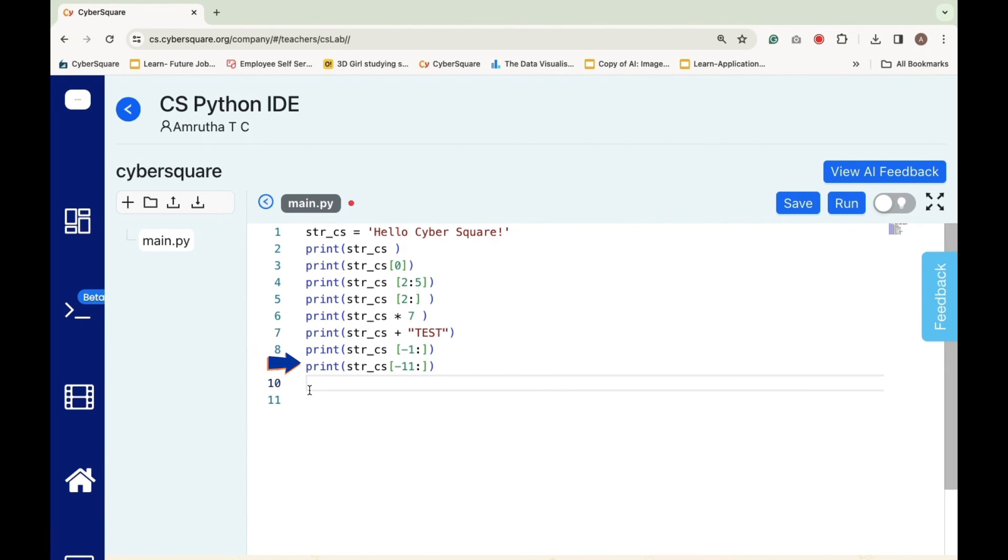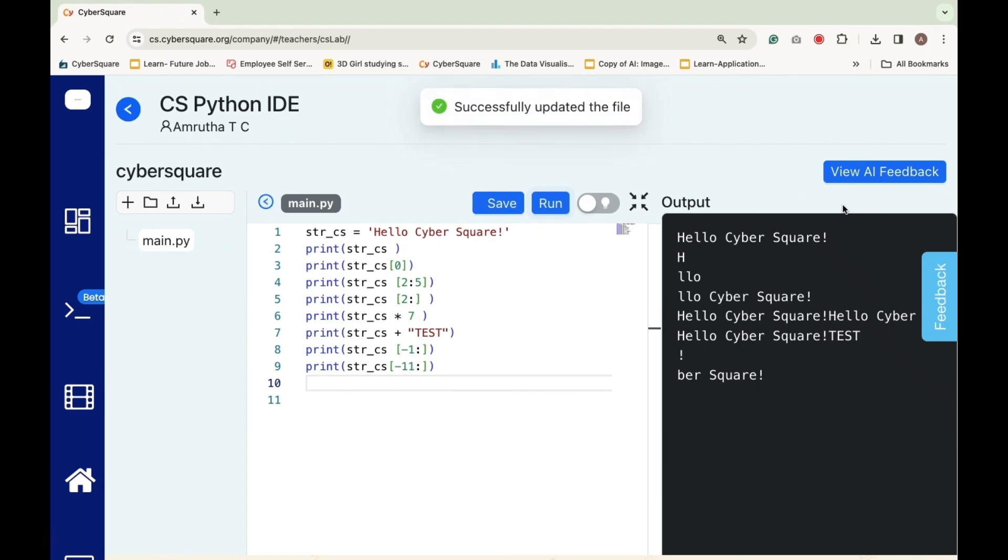istr_cs[-11:] will print the last 11 characters of the string istr_cs. Thank you.